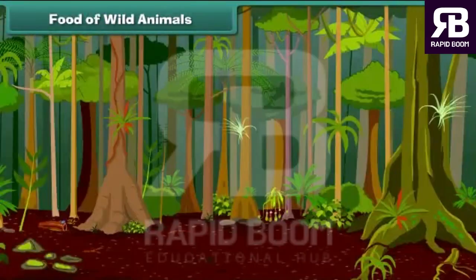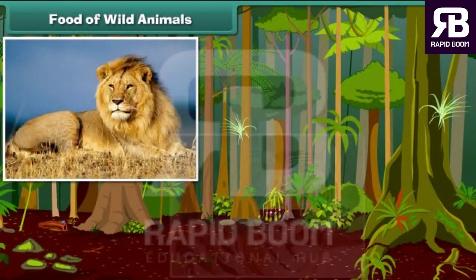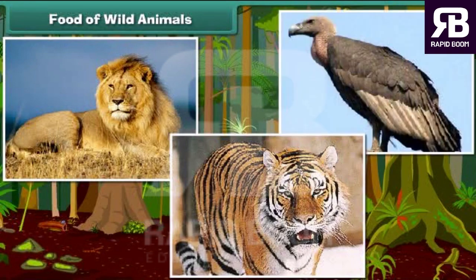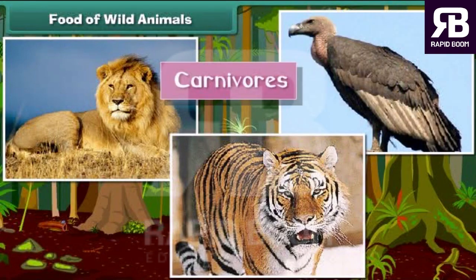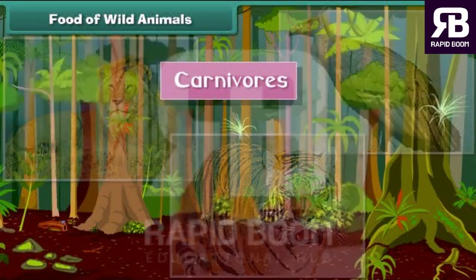Let us look at what wild animals eat for food. Lions, tiger and vultures are carnivorous animals. They eat flesh of other small animals.